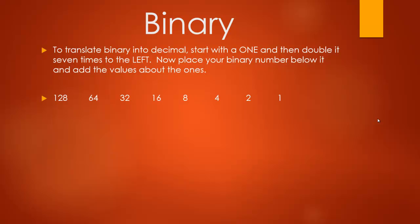You start with 1 and then you double it 7 times. So 1 times 2 is 2, 2 times 2 is 4, 4 times 2 is 8. You do that 7 times until you hit 128. So those are the values for your different bits inside the byte. Remember a byte is 8 bits and here we have our 8 bits.